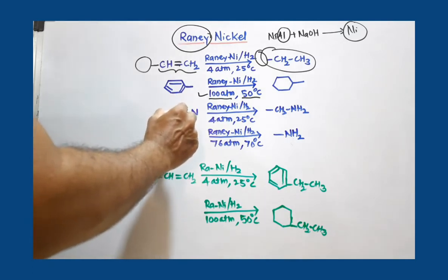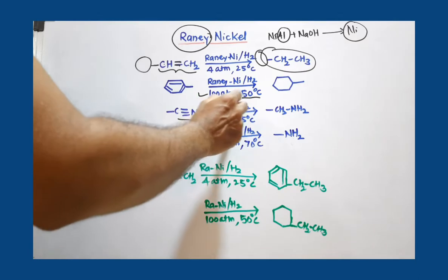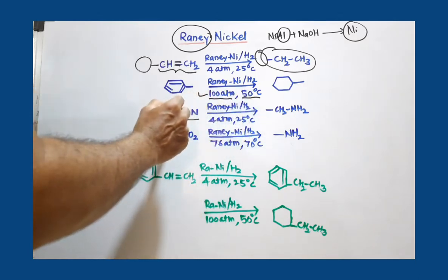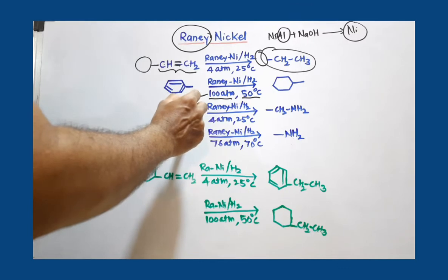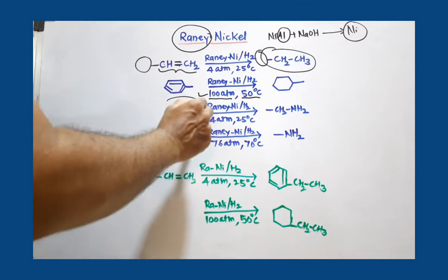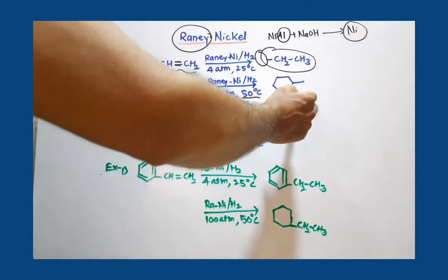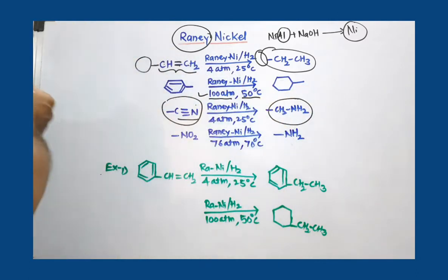Carbon-nitrogen triple bond can also be reduced by using Raney Nickel and hydrogen. In fact, 2 hydrogens added here and 2 hydrogens added here. Always remember, cyanide is converted to CH2-NH2.